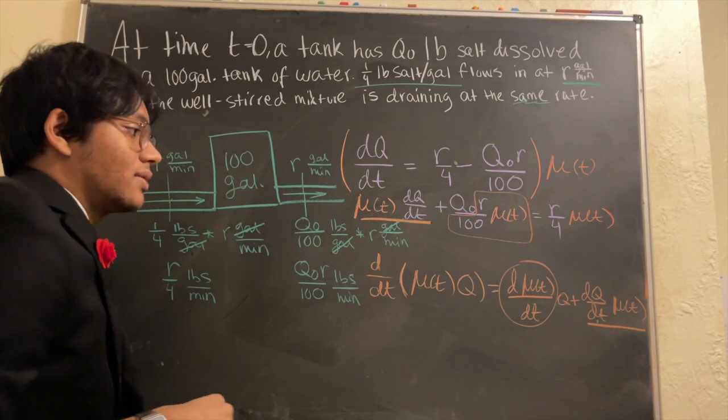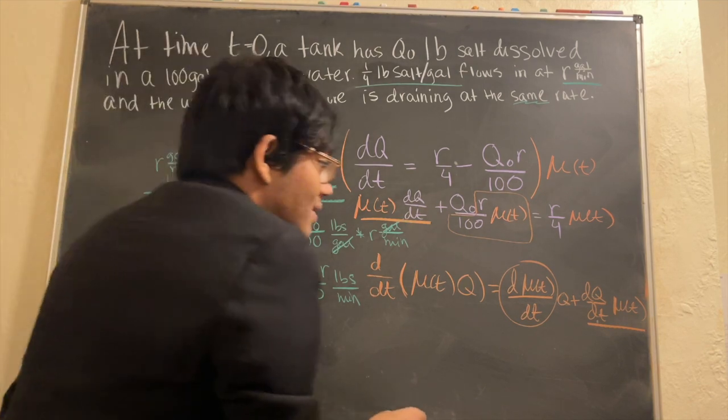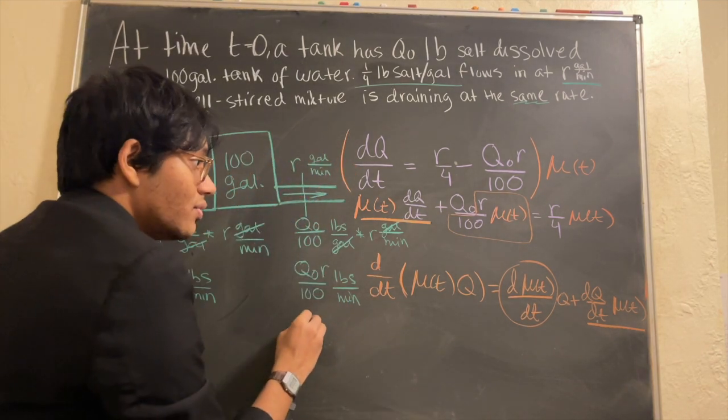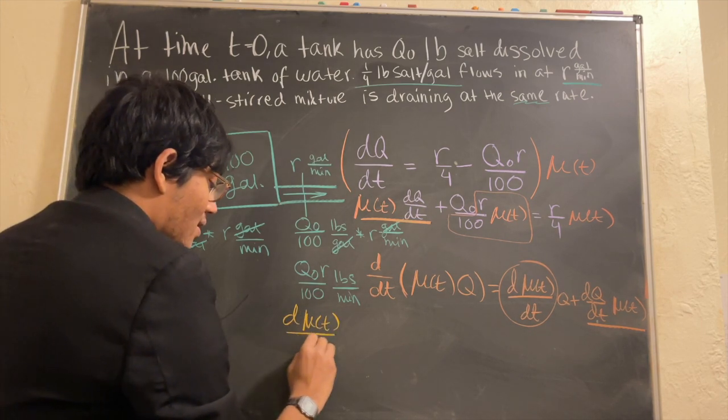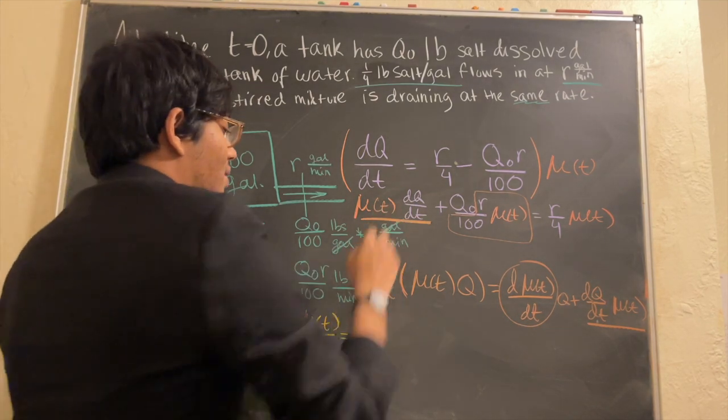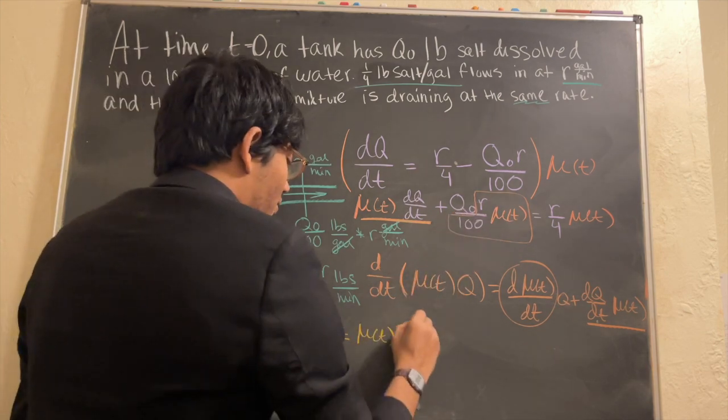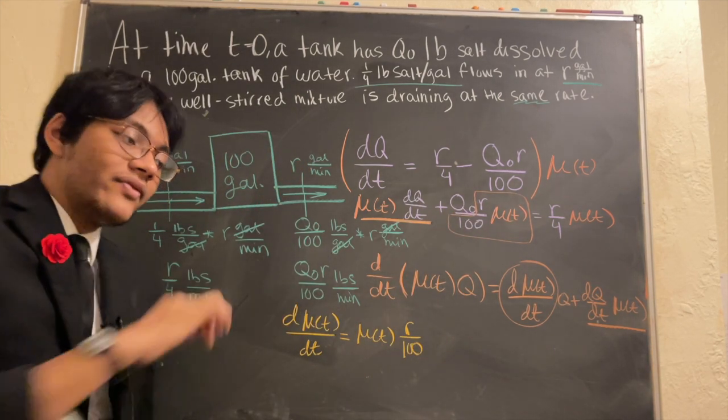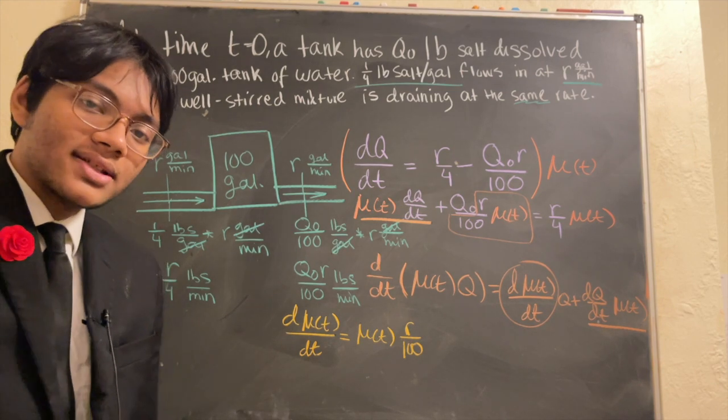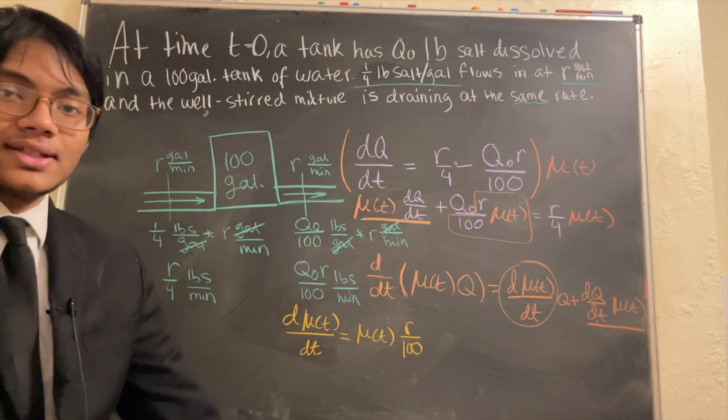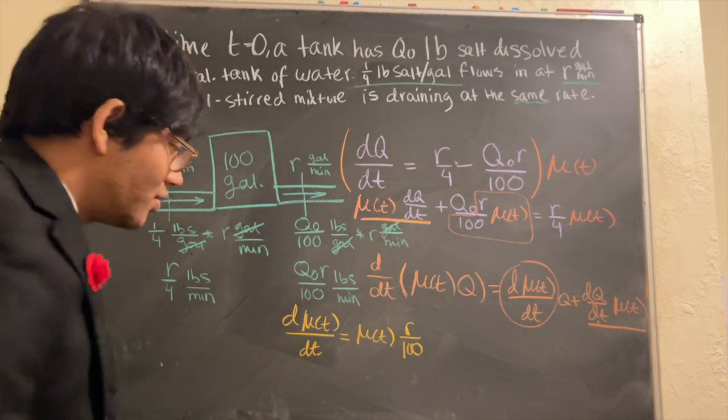Everything except q naught. And so how can we do that? Well, we can simply write that mu, that the derivative of whatever our magical integrating factor is must be equal to itself times r over 100. Now ladies and gentlemen, having seen a bunch of these differential equations, can you guess what our integrating factor is? I want to give you 5 seconds or more if you pause the video. 5, 4, 3, 2, 1.